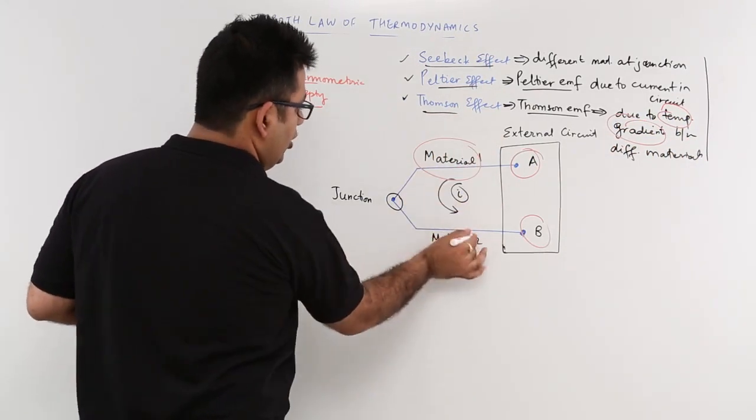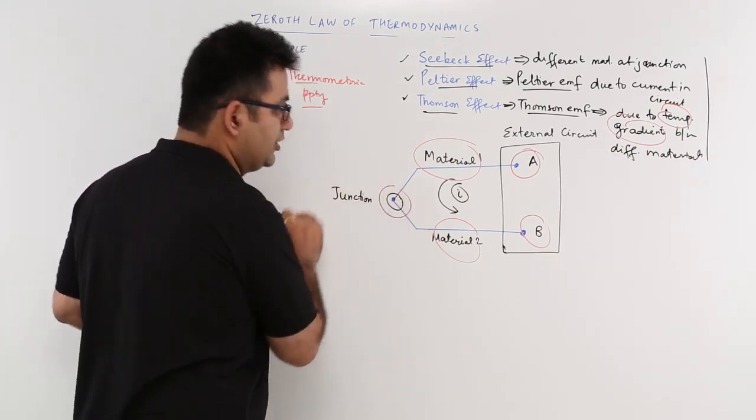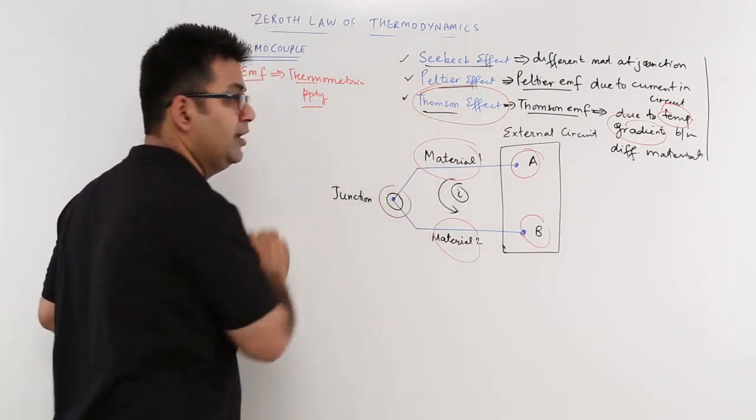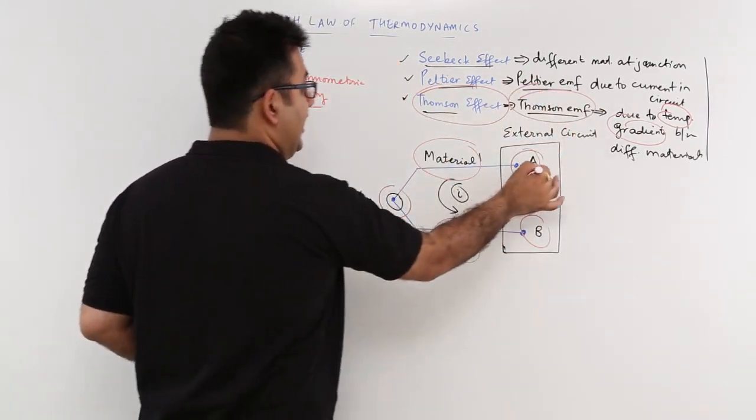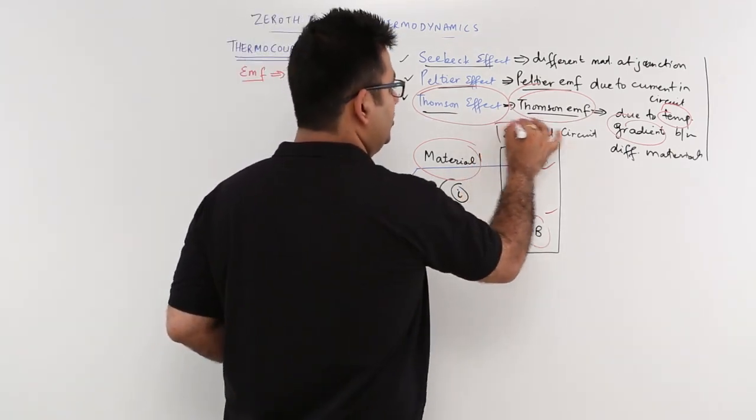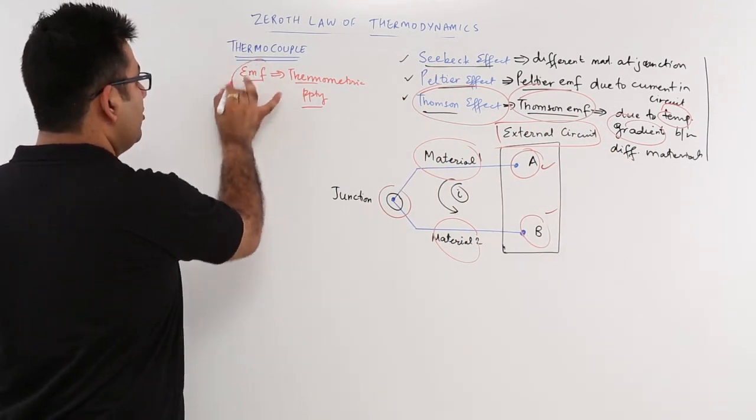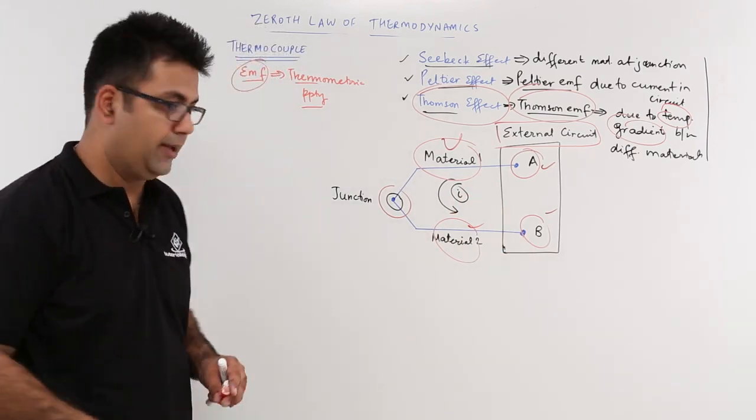When the temperatures of these two materials are different and they are joined at a junction like this, it will create a Thompson effect, thus producing a Thompson EMF at these two ends of the circuit, which can be used to run some external circuit. And this generation of EMF will indicate that these two materials are at different temperatures.